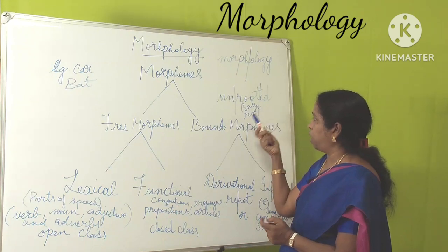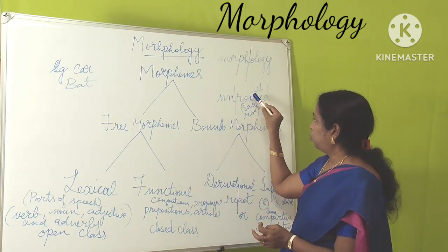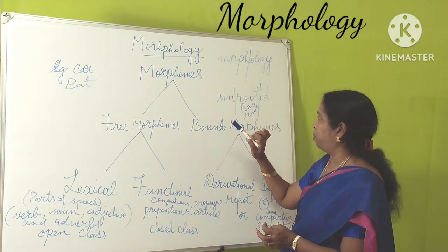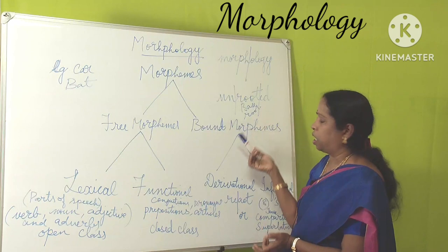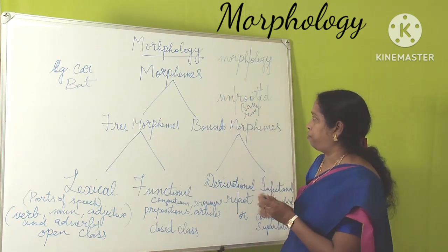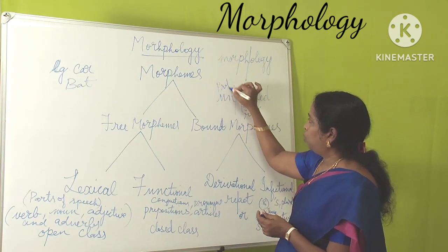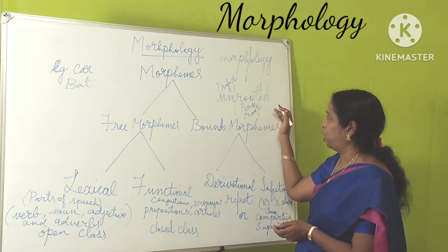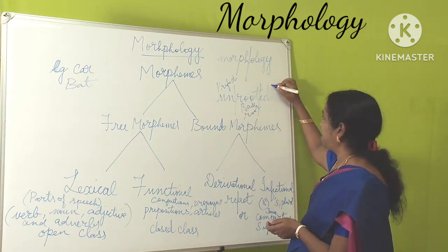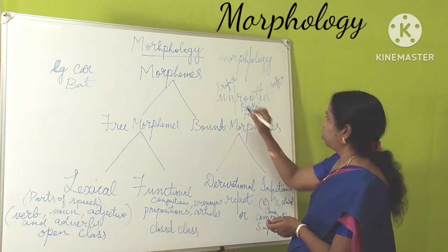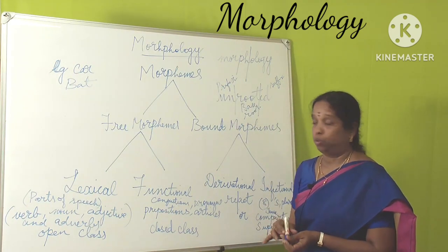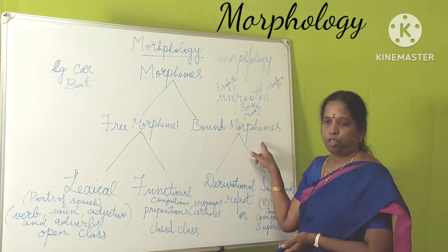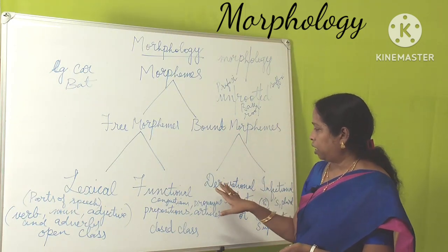One example is 'unrooted.' The root is the base — you can call it base, root, or stem. This root can stand on its own to give meaning, so it is a free morpheme. When you add 'un' and 'ed' to it, they become bound morphemes. 'Un' is a prefix, added before the word, and 'ed' is a suffix, added after the word. Both prefixes and suffixes are called affixes. Any affix that depends upon a stem or root is called a bound morpheme.